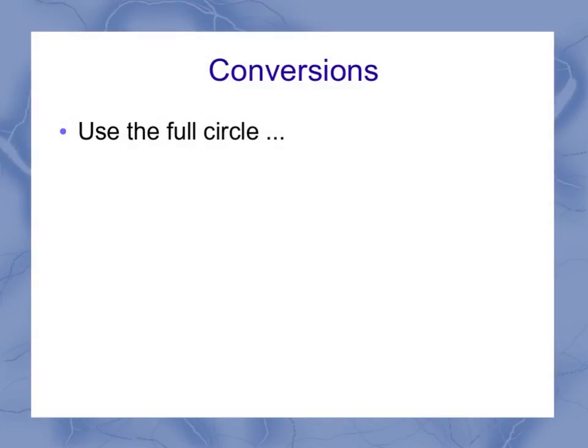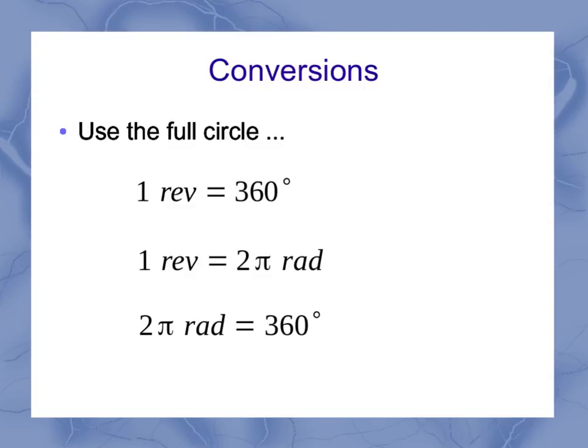Now in physics, we're going to have problems that might specify more than one unit, and so we're going to have to do unit conversions. We use our full circle as our guide. So 1 revolution equals 360 degrees because both of those represent going once around a circle. Similarly, 1 revolution is 2 pi radians. Or I could use 2 pi radians equals 360 degrees. So these are our unit conversion factors if I have to do some unit conversions.